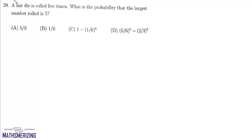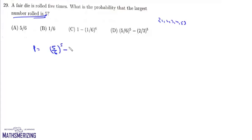Question 29: a fair die is rolled five times; find probability that the largest number rolled is 5. By exclusion: probability that largest is 5 or less is (5/6) to the power 5; probability that largest is 4 or less is (4/6) to the power 5 equals (2/3) to the power 5. Required probability is (5/6) to the power 5 minus (2/3) to the power 5, and that's option D.